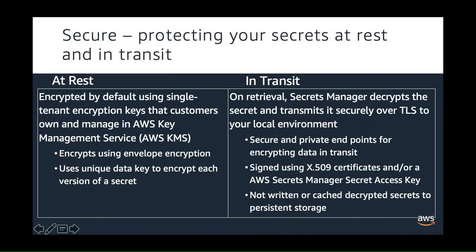As mentioned earlier, secrets are encrypted by default. AWS Key Management Service provides the primary encryption key, which is owned and managed by customers. This key is then used to encrypt the data key, which in turn is used to encrypt the secrets. During retrieval, Secrets Manager uses the KMS key to decrypt the data key, which is consequently used to decrypt the secret value. This secret value is then transmitted securely over TLS.